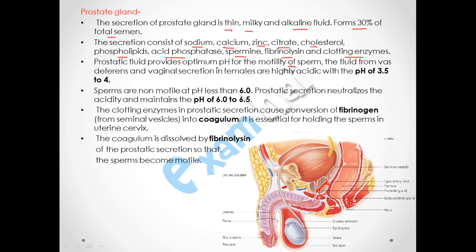For sperm motility, the pH should be above 6. If the pH is less than 6, the sperm will be non-motile. The prostate gland releases an alkaline fluid which neutralizes the acidity and maintains the pH at 6 to 6.5, at which the sperm becomes motile.